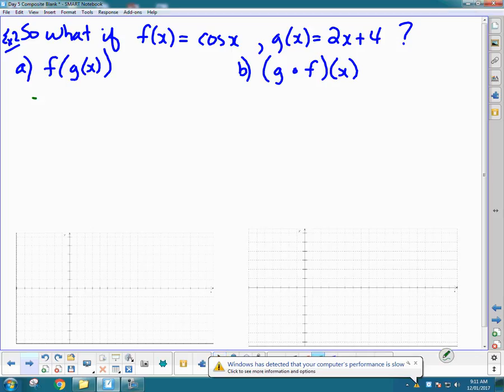So this is like taking that linear function and plugging it into the trig function. So the g function is this linear, 2x plus 4, and I'm going to take it and plug it into the trig function. So instead of the cos of x, it's the cos of 2x plus 4. So what would that look like? What if we actually looked at graphing this?